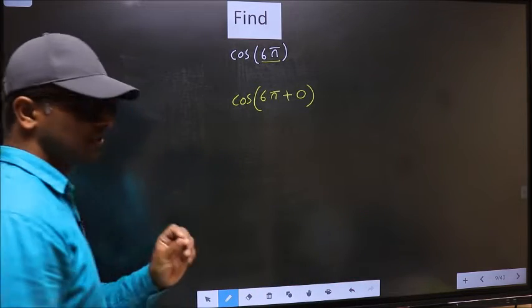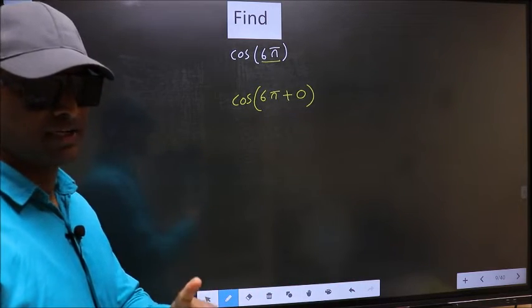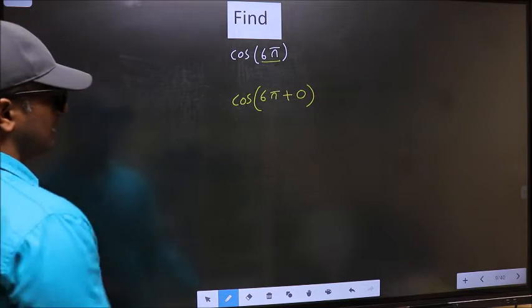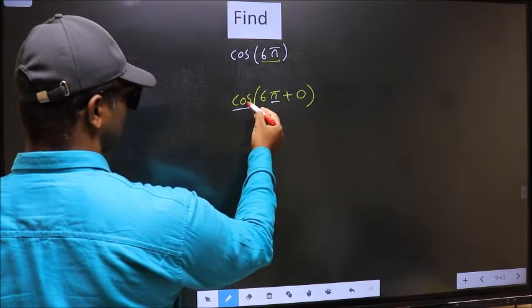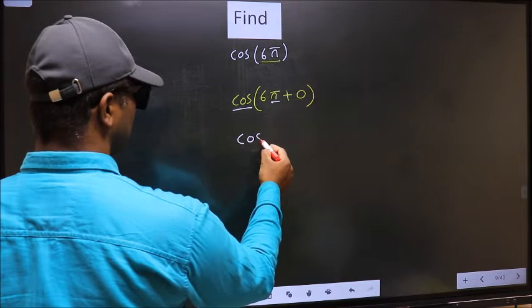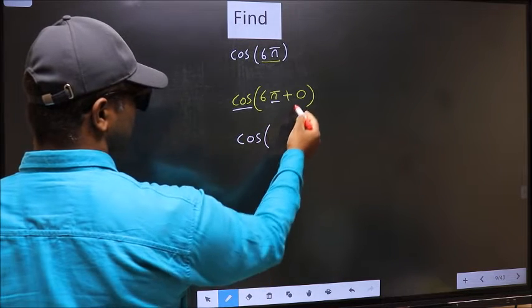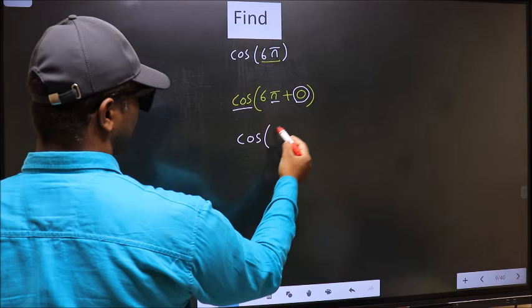Now you should write 6π plus 0. This is step 1. Next, here we have π, so cos is not going to change. It will remain cos, and inside we get this angle 0.